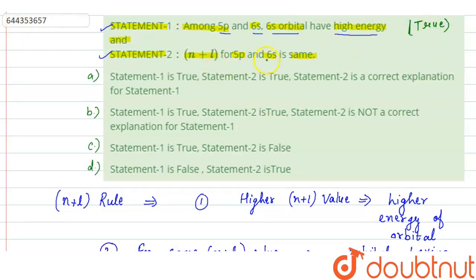In the second statement it is given that n plus l for 5p and 6s is same — this is also true. But statement 2 does not explain statement 1, because the explanation for statement 1 is that the 6s orbital has a higher value of n.